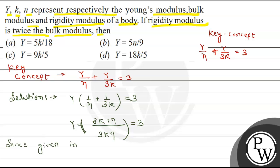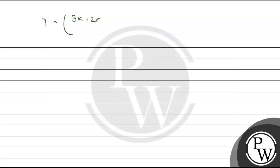As given in the question, the value of eta is equal to 2K — that is, the modulus of rigidity is twice the bulk modulus. Substituting this value into the above expression, we get Y into (3K + 2K) / (3K × 2K) equals 3, which gives Y into 5K / 6K² equals 3.